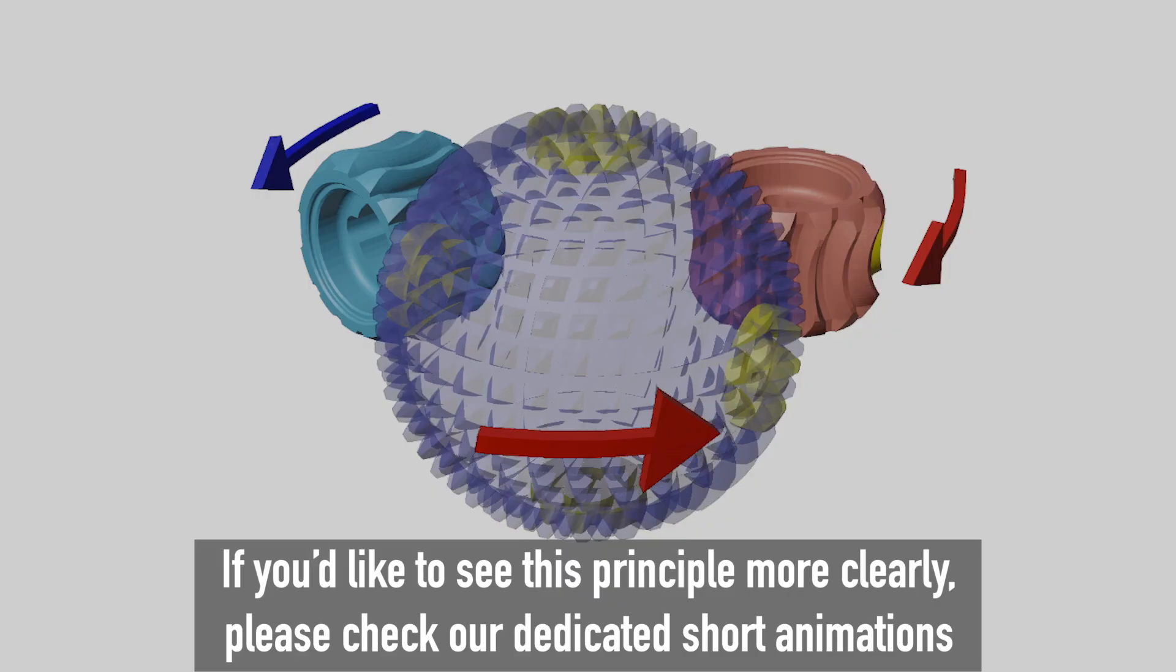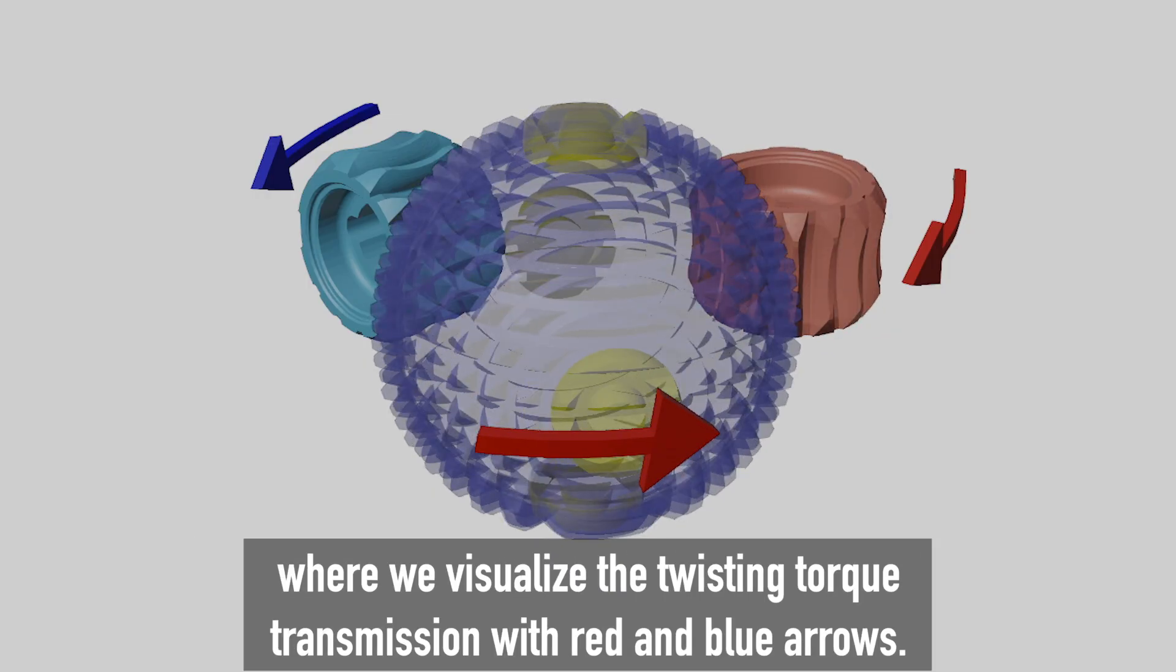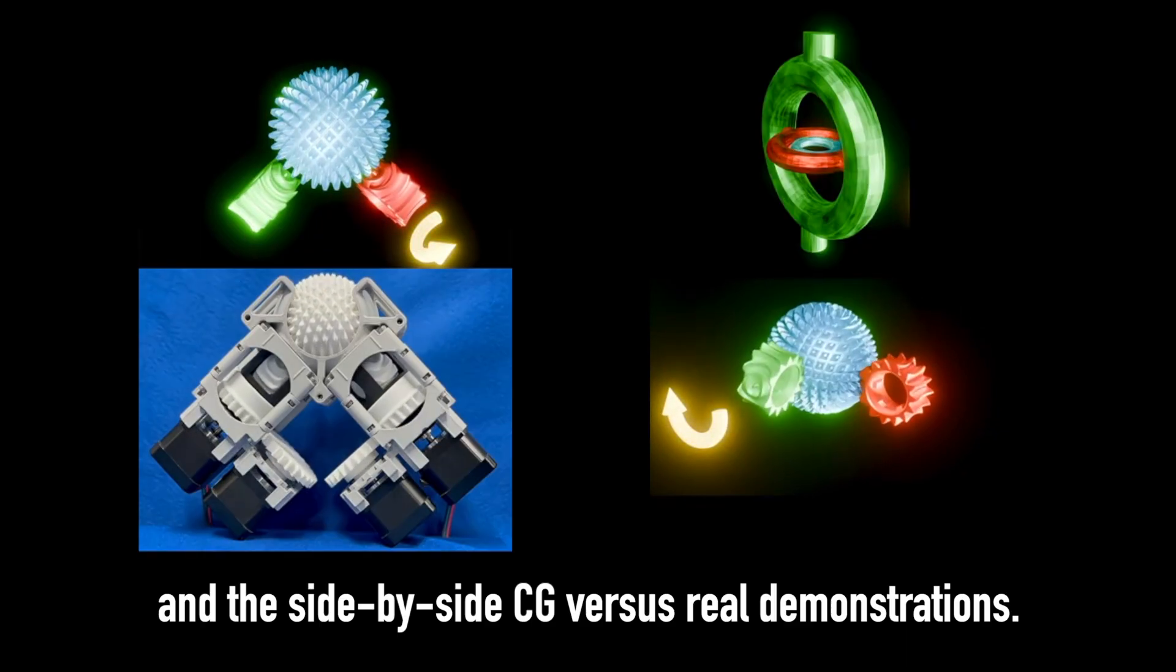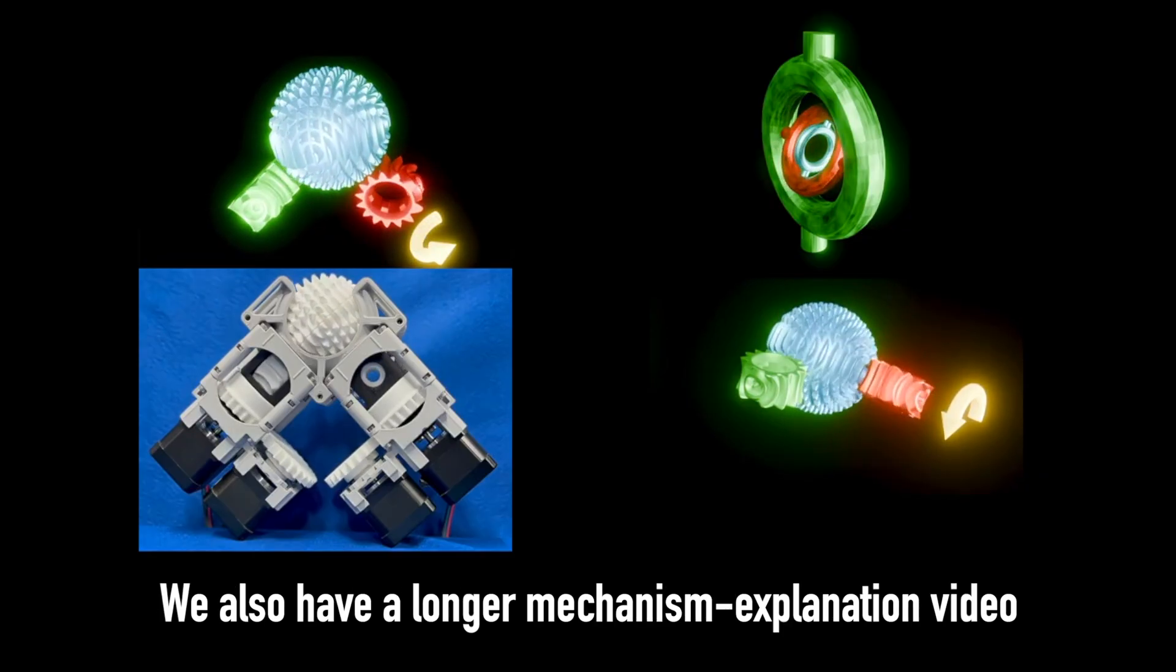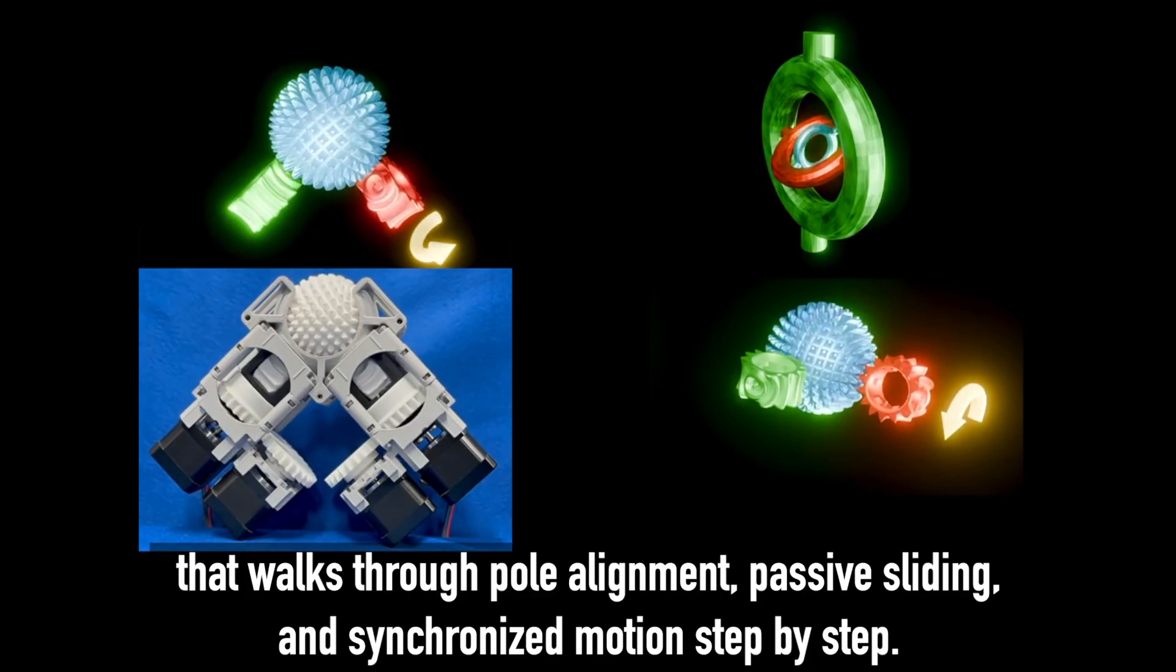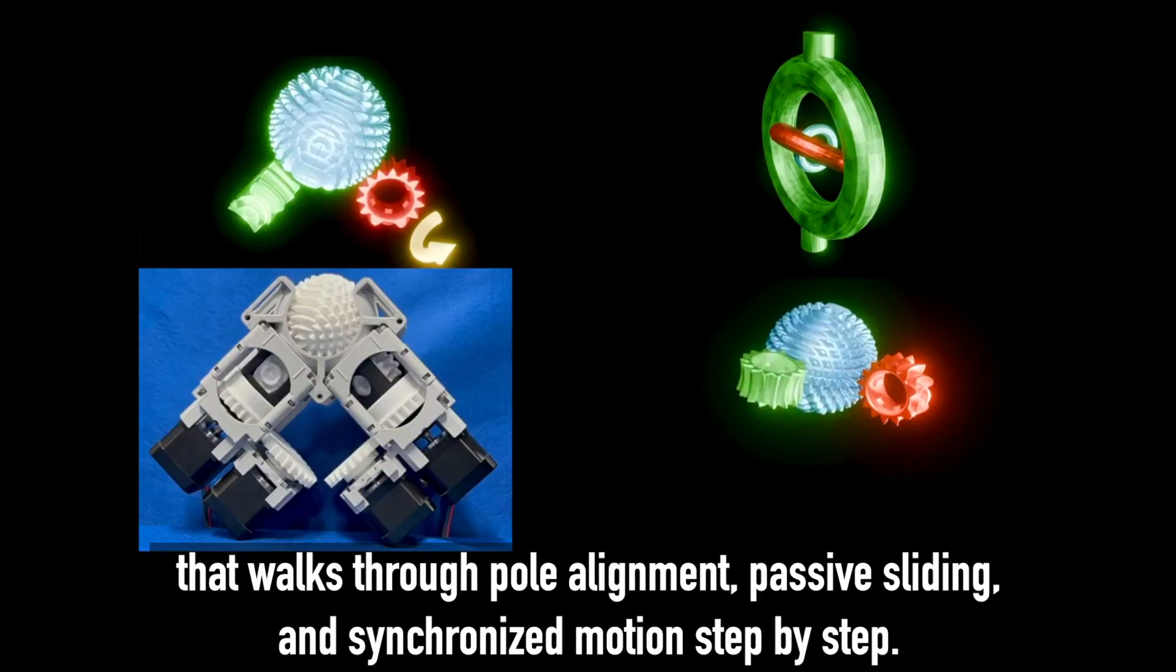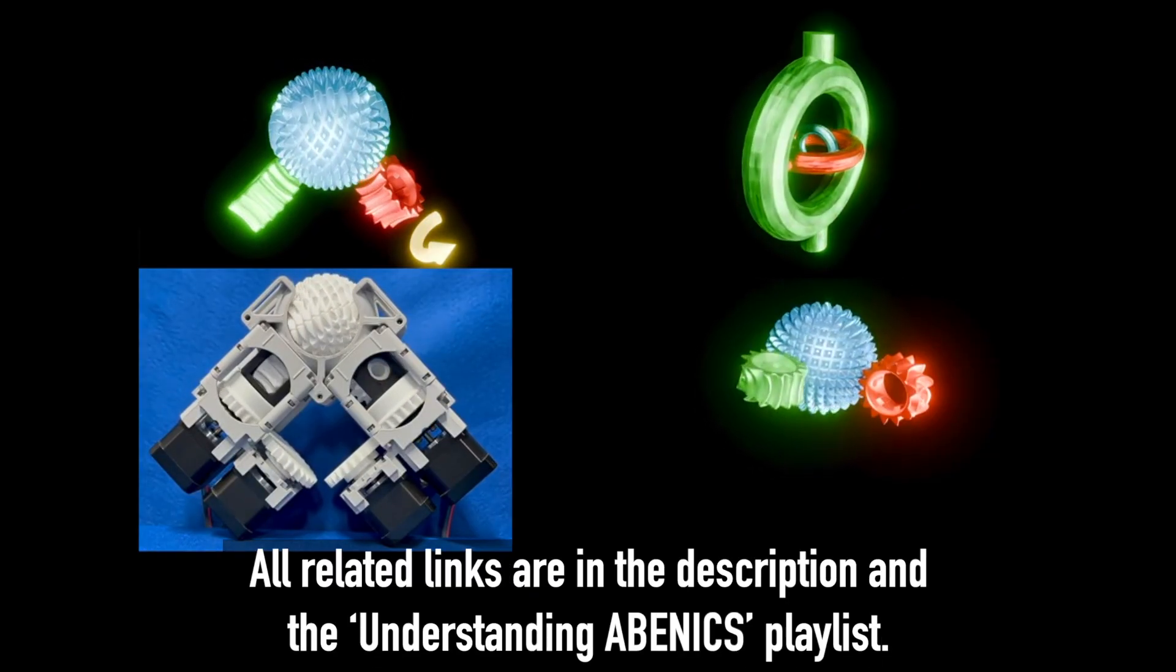If you'd like to see this principle more clearly, please check our dedicated short animations, where we visualize the twisting torque transmission with red and blue arrows, and the side-by-side CG versus real demonstrations. We also have a longer mechanism explanation video that walks through pole alignment, passive sliding, and synchronized motion step-by-step. All related links are in the description and the Understanding AVENIX playlist.